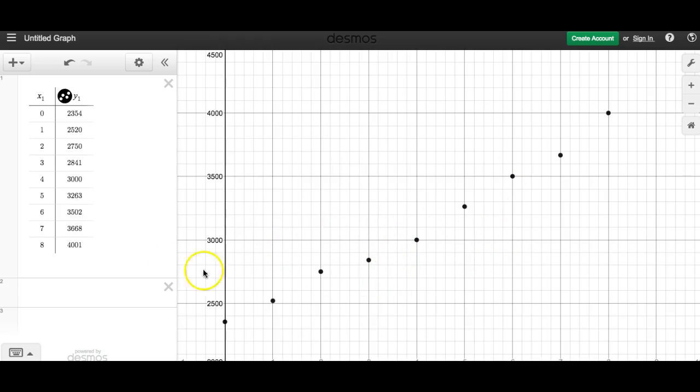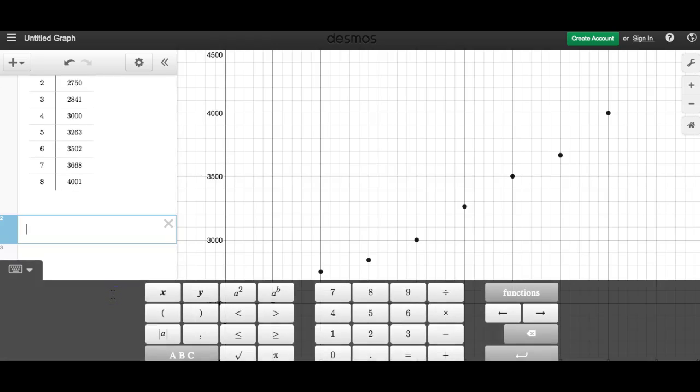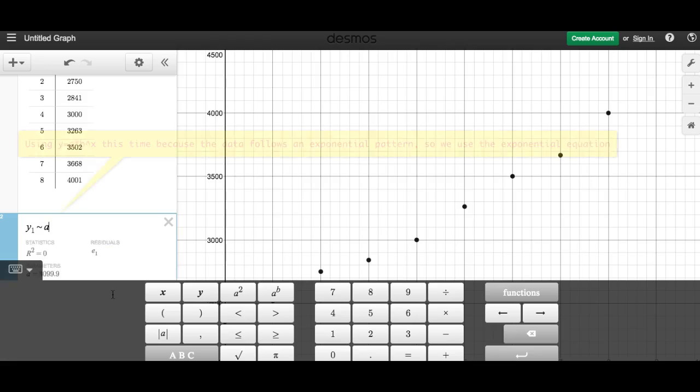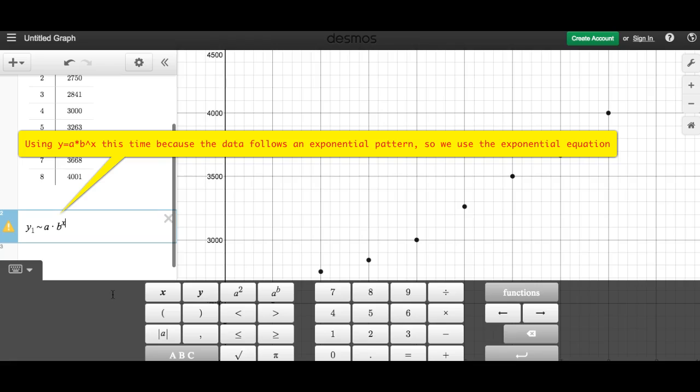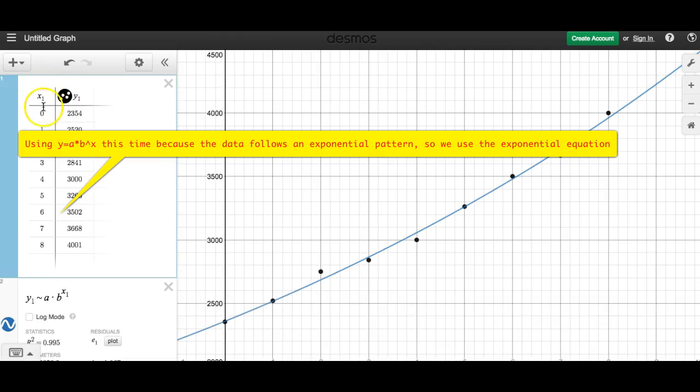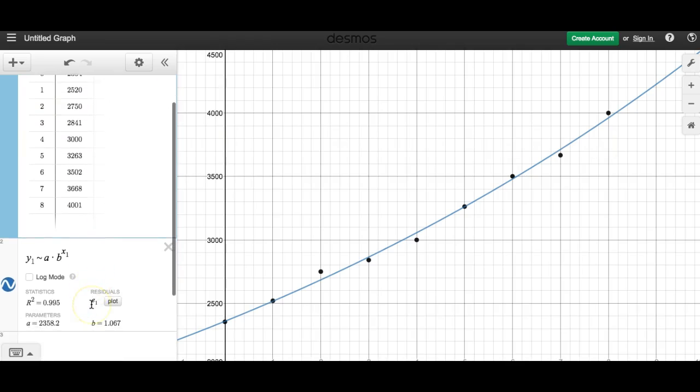So now we're going to model these with an equation. We can use the data set Y1 and is not equal to, it's squiggly because we're running a regression, and then A times B to the X. But of course we want to use this list, X1. So here we go. X1 and Y1, that's our data.